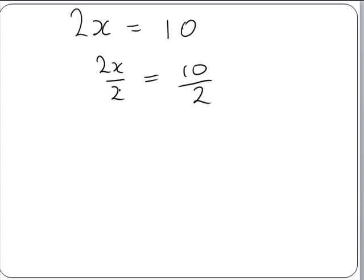Now, 2 will divide into 2 once, which will leave us with 1x. And on the right hand side, 2 will divide into 10 five times. So we are left with 1x equals 5. And 1x is the same as x. So we have x equals 5.